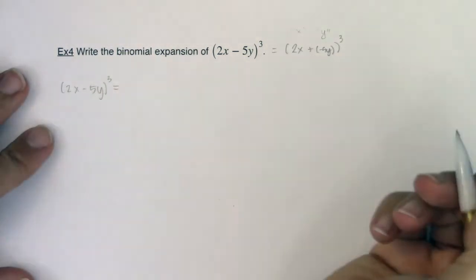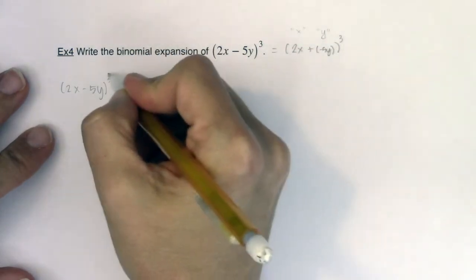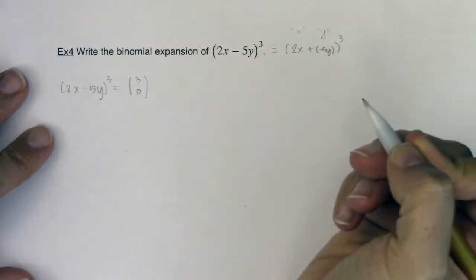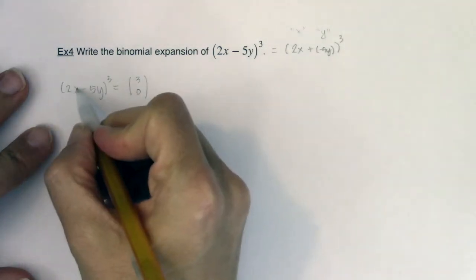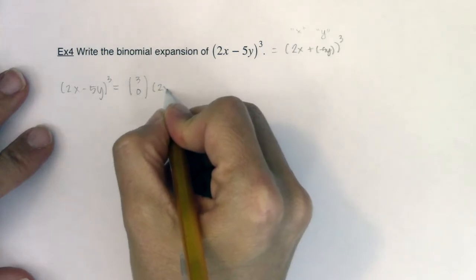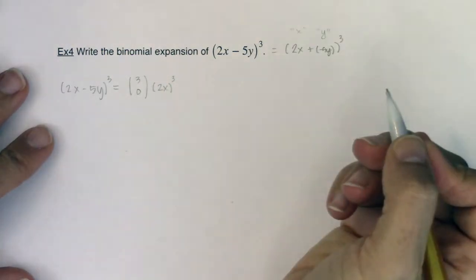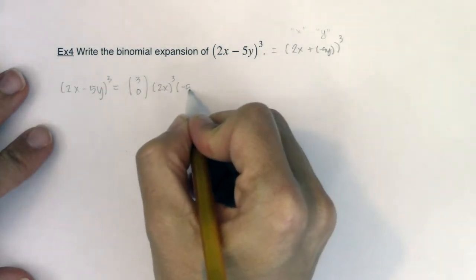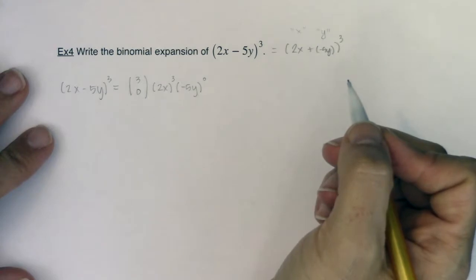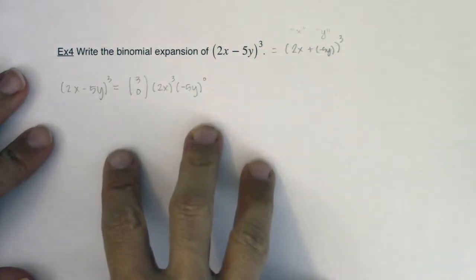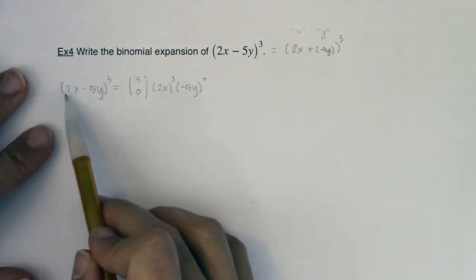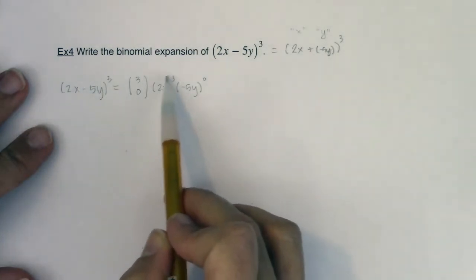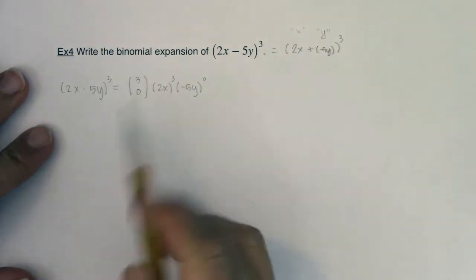When you want to use the binomial theorem to expand, take your exponent here and our first coefficient will be 3 choose 0. And instead of just doing x cubed, we're going to do in parentheses 2x quantity cubed. And instead of just doing y to the 0, we're going to do negative 5y raised to the 0. So we're changing up our binomial expansion to incorporate the fact that we have a 2x here and a negative 5y here, so we're cubing all of the 2x and we're raising all of negative 5y to the 0.